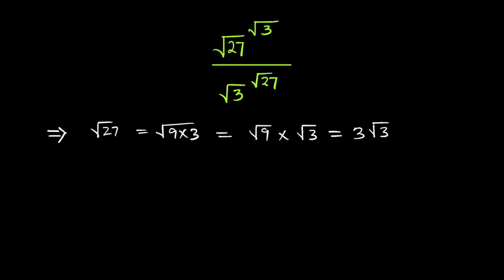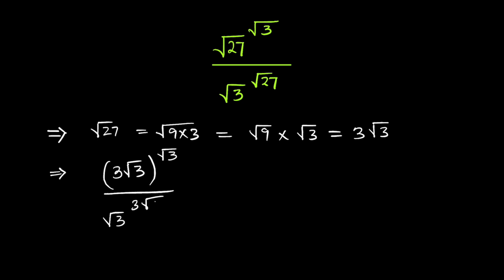Substituting into the expression, we have 3 root 3 raised to the power of root 3, divided by root 3 raised to the power of 3 root 3. Opening up the brackets in the numerator by the law of indices, this becomes 3 raised to the power of root 3 times root 3 raised to the power of root 3.